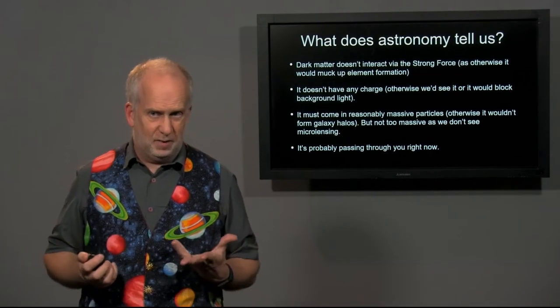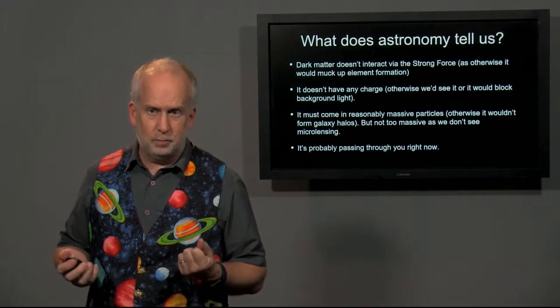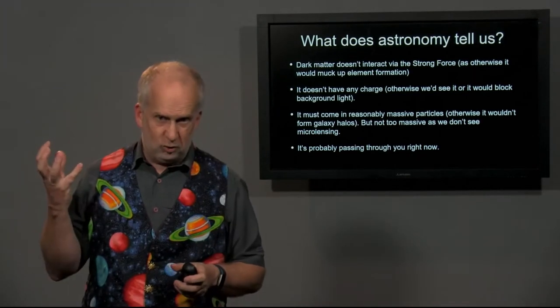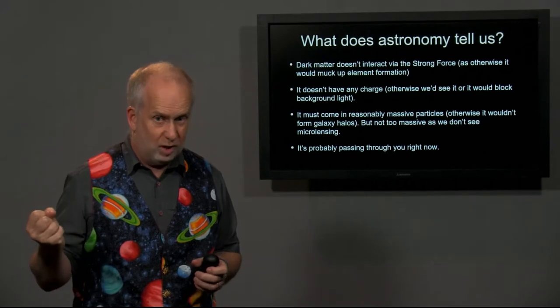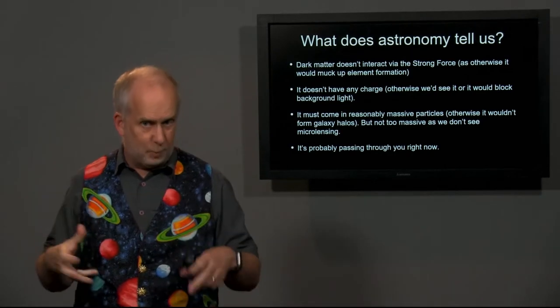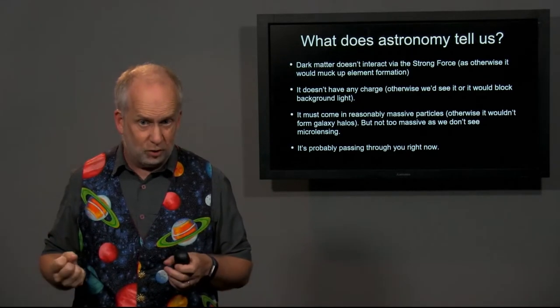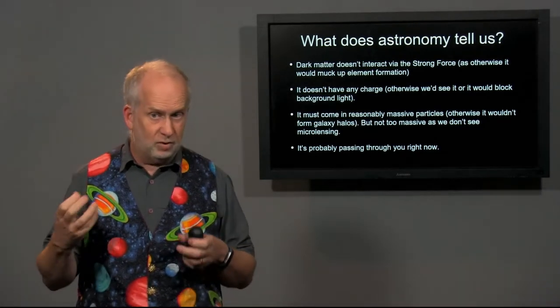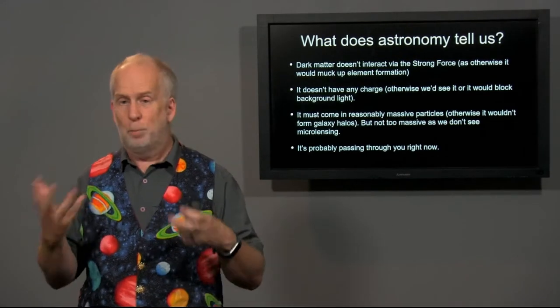Now, a reminder: what does astronomy tell us about dark matter? Well, it tells us that dark matter must not interact via the strong nuclear force, because if it did, it would muck up all the creation of elements in the early universe. It also can't interact via electromagnetism, because if it does, we'd see it, and it would block background light.